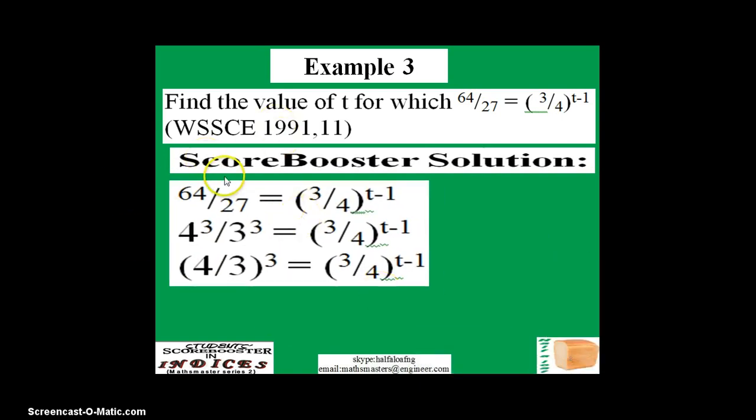What I've just done here is to repeat the question. What I'm gonna do is to factorize this, but I must be very careful here. My base will be 3 over 4. I'm looking for ways of making 64 over 27 to become 3 over 4 somehow. Rather than finding the factor of this one in terms of 2, I am using 4 because of what I have here.